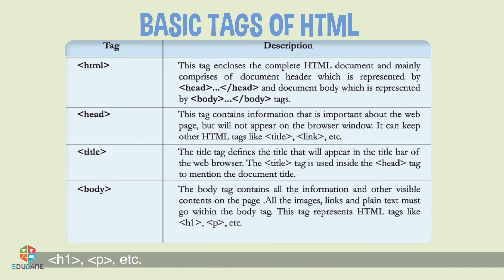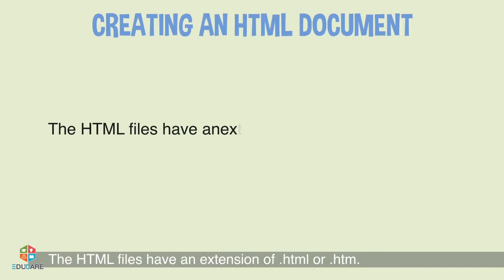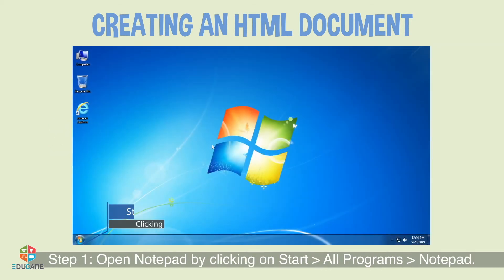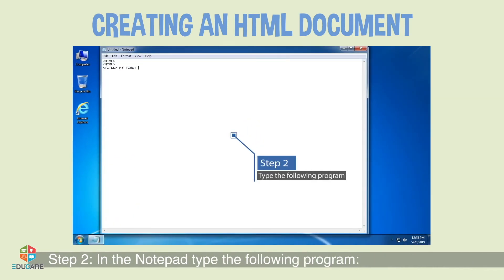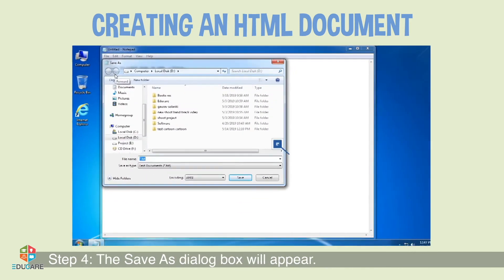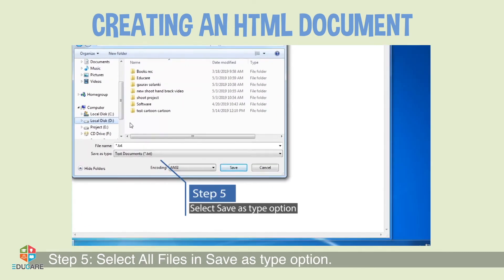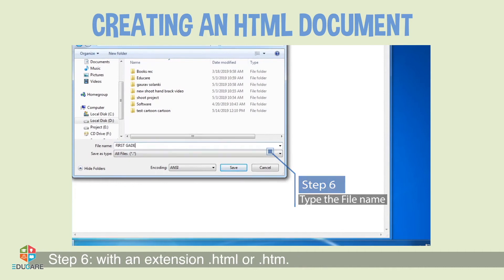Creating an HTML Document: HTML files have an extension of .html or .htm. To open and create a document using Notepad: Step 1 — Open Notepad by clicking Start, All Programs, Notepad. Step 2 — In Notepad, type the HTML program. Step 3 — Click on File, Save menu option. Step 4 — The Save As dialog box will appear; select the folder where you want to save it. Step 5 — Select All Files in the Save As Type option. Step 6 — Type the file name with extension .html or .htm. Step 7 — Click the Save button.